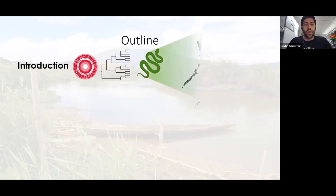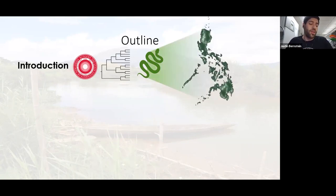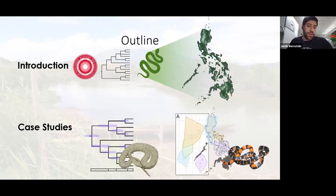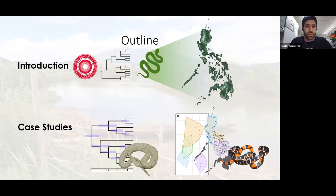I'll then transfer over to talking about the Philippines and Philippine biodiversity. This will roll into two case studies: one on the preliminary end, looking at the systematics and diversity in a group called dog-faced water snakes using molecular data like DNA, and another that we just wrapped up, looking at an endemic lineage of snakes in the Philippines called Hemibungaris, using morphological data.